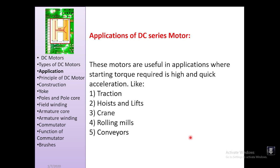DC series motors are used in applications where high starting torque and quick acceleration are required, such as traction, hoists, cranes, rolling mills, and conveyors. Nowadays, DC motors are also used in electric bikes and EVs, including BLDC motors, due to their low power consumption.